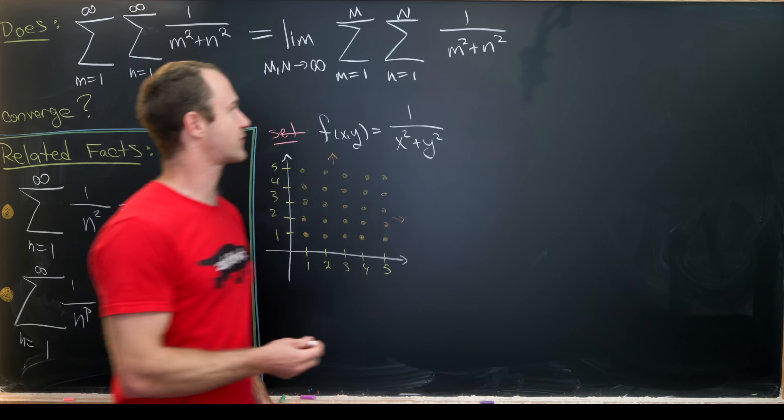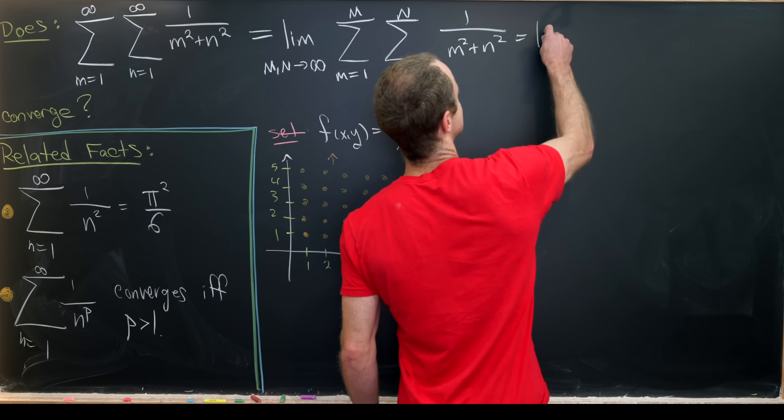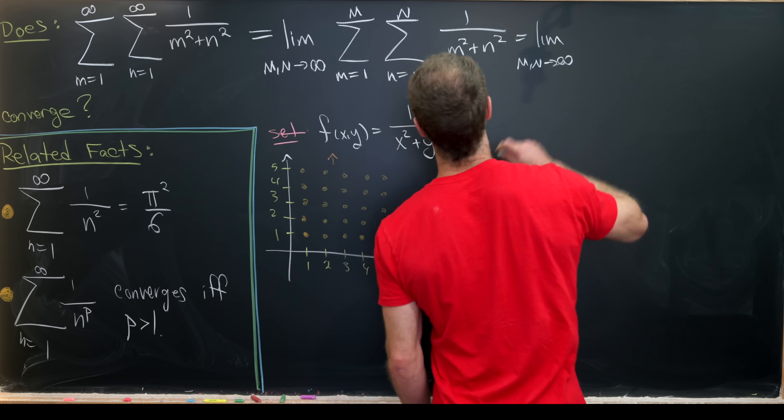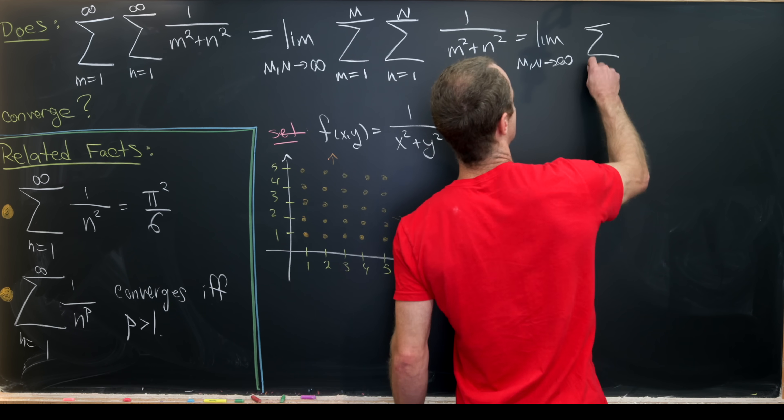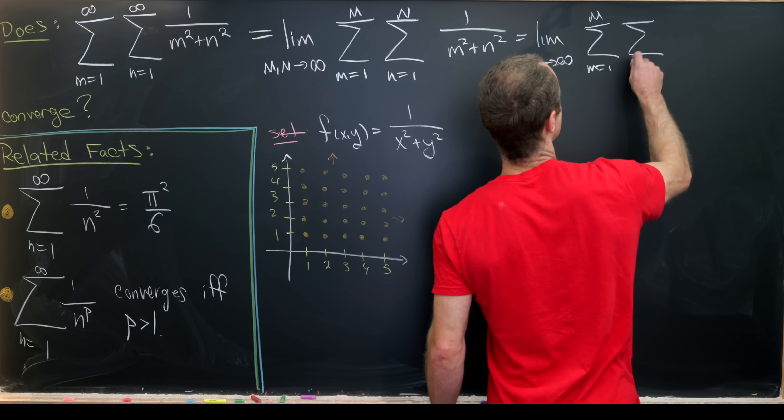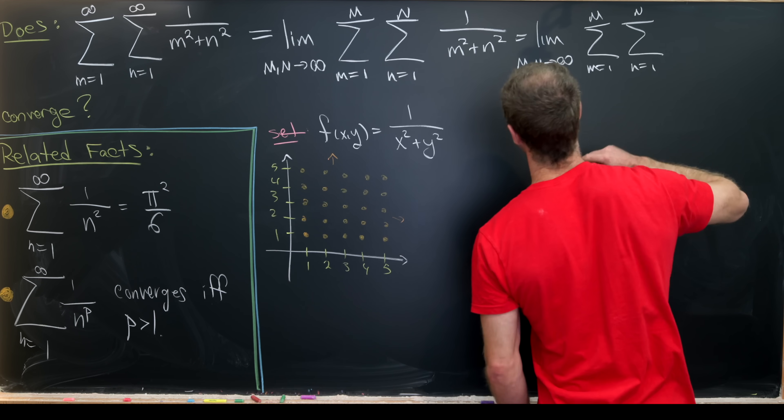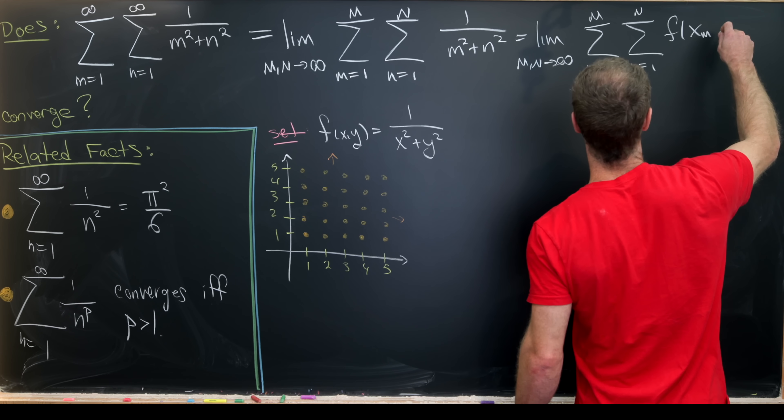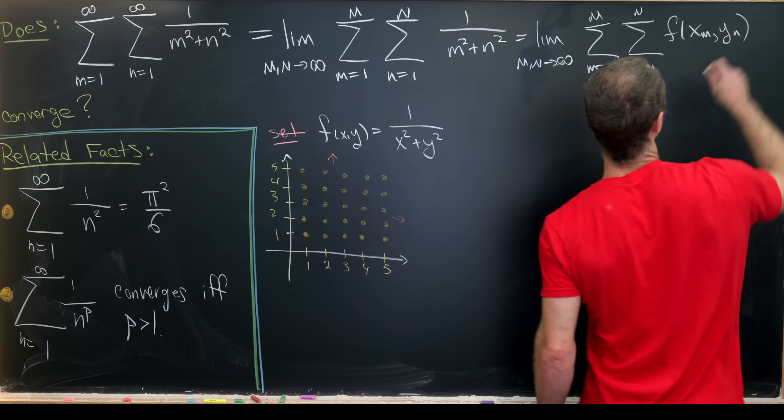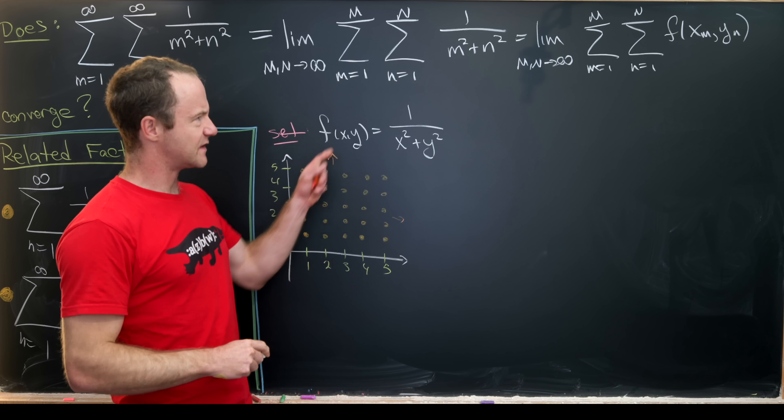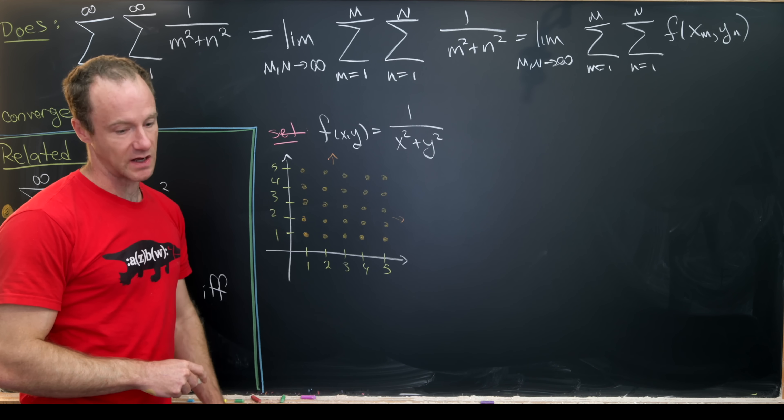But now we could rephrase this thing right here as the limit as m and n go to infinity of the sum as m goes from 1 to capital M, and then the sum as n goes from 1 to capital M of f evaluated at x sub m, y sub n, where we've broken this up into some sort of Riemann sum.